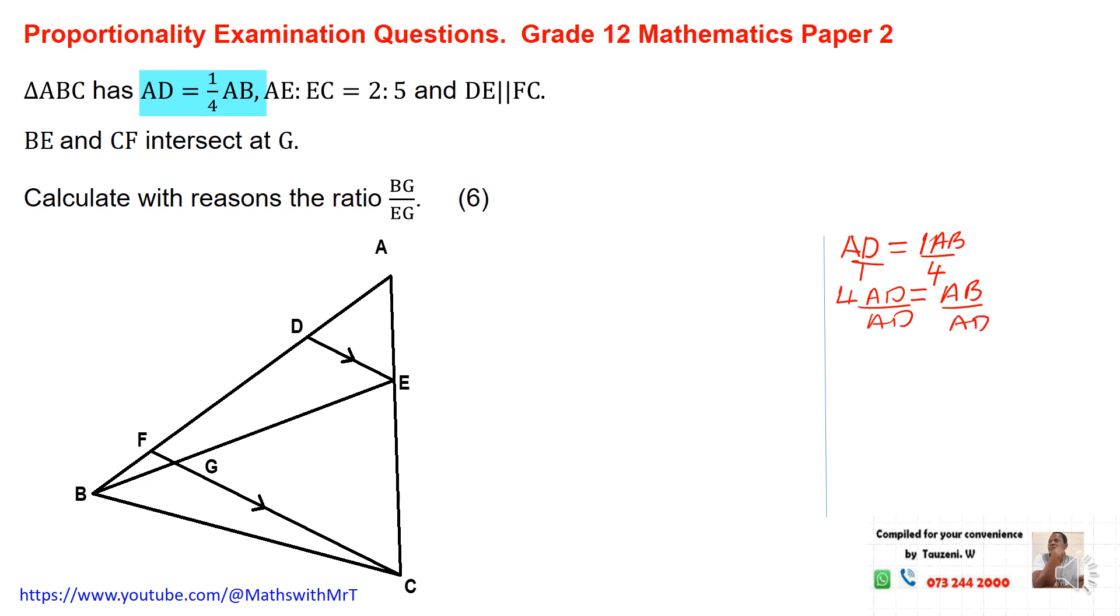This is equal to AB divided by AD. And this 4 is 4 over 1. So we can safely say that AB to AD is equal to 4 is to 1. That is the ratio that we get from the first set of information that we have.